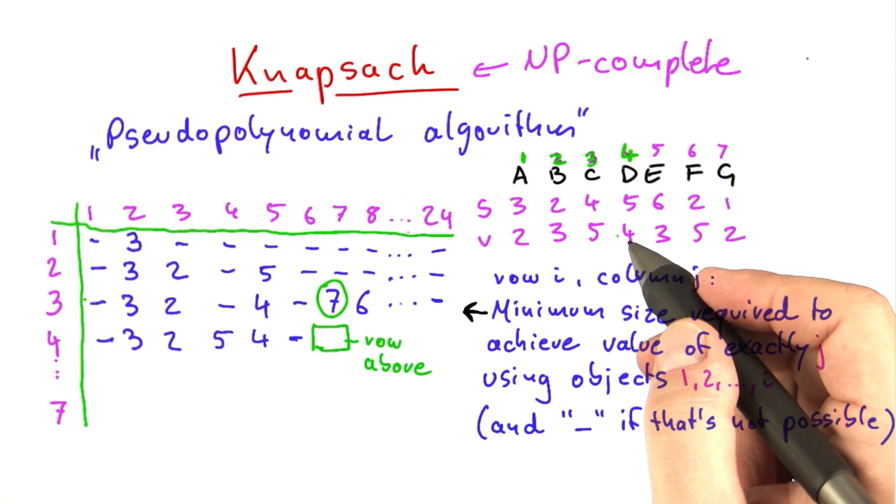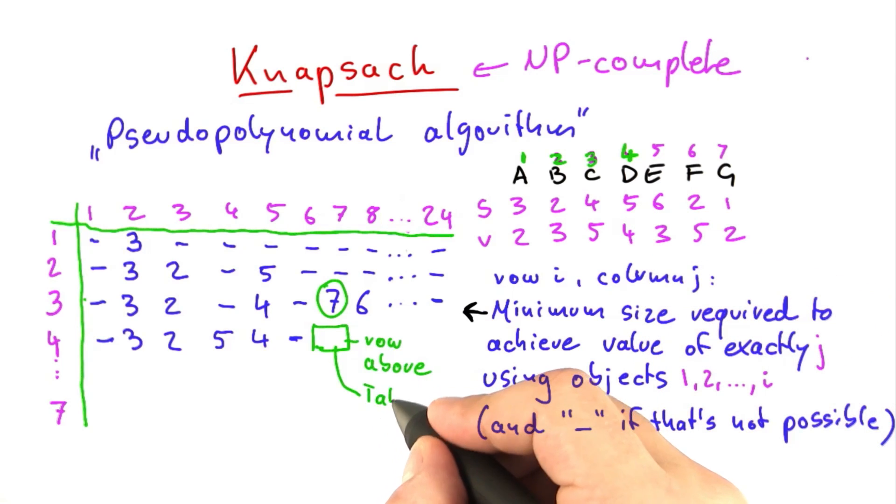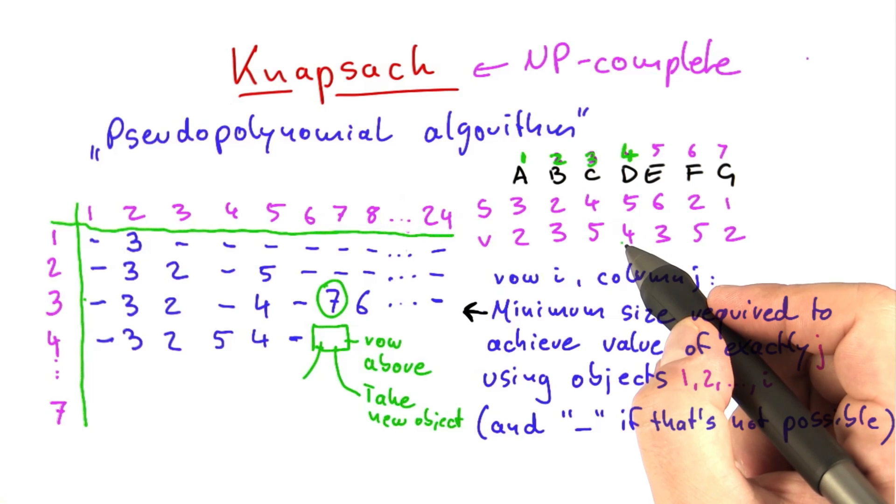So it could be row above. We could also try to take d directly, but d has a value of 4, so here that's not possible. So take the new object. And finally, there's only a third possibility here. Well, since d has a value of 4,